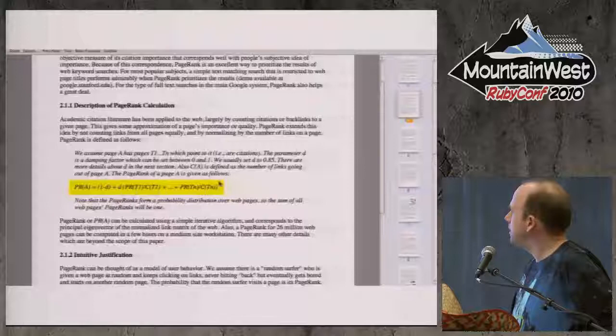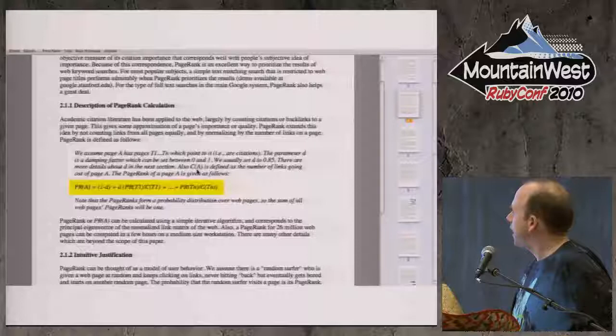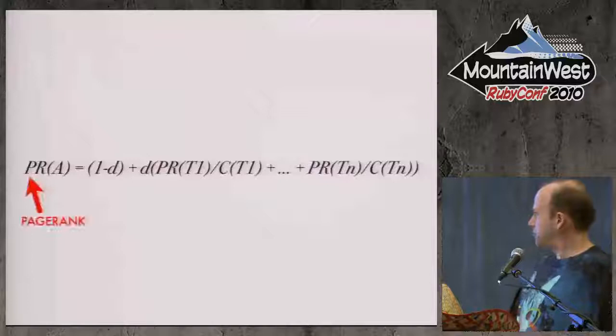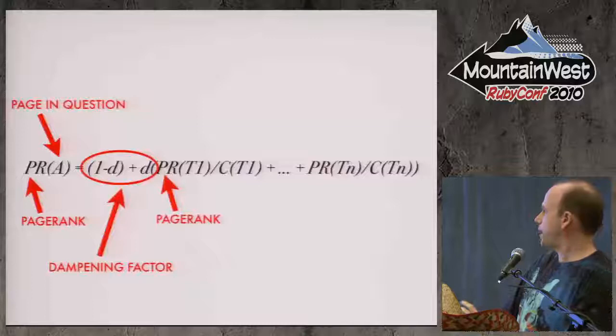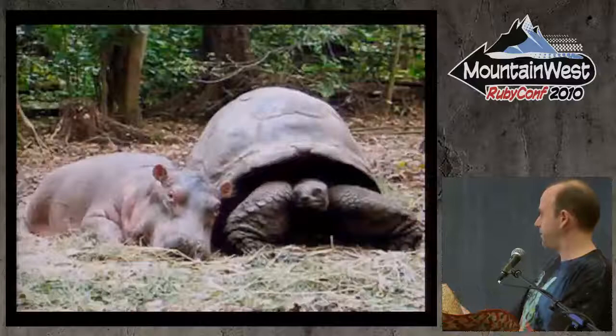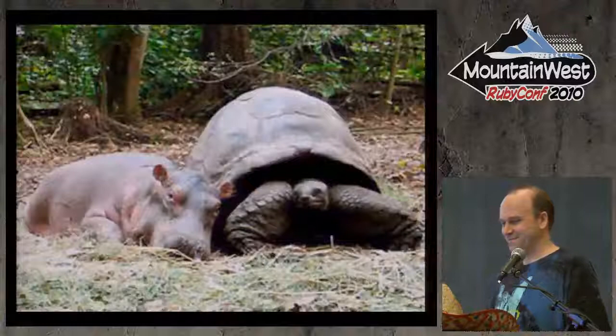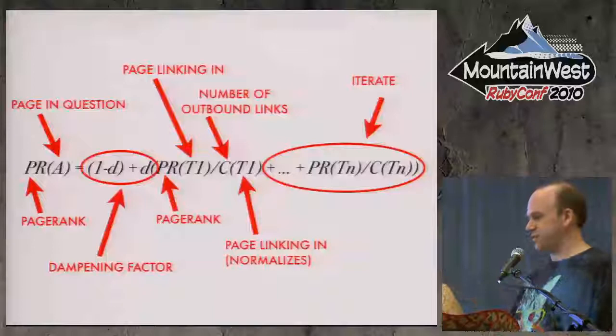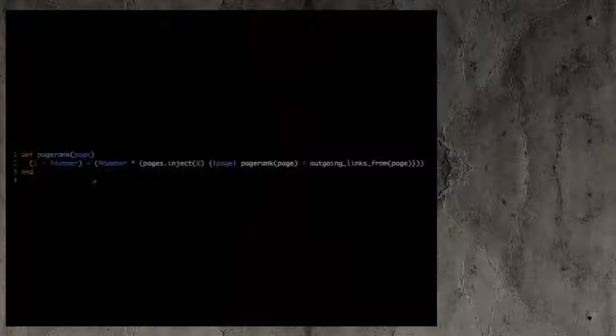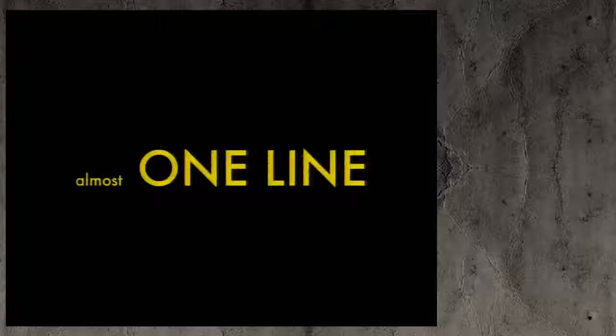When you have PR T1 through PR TN, what you're saying basically is for T1 through TN do this equation. So you're iterating over a collection and doing the same equation on it. And it sounds complicated, but here it is in 126 lines of Python. We can do it a little bit better than that. We assume page A has pages T1 through TN which point to it. The parameter D is a damping factor. And C is defined as the number of links going out of page A. So you got the page rank of a given page is equal to a damping factor applied to the page rank of a page linking in divided by the number of outbound links on the page linking in, and then you iterate over all those pages. And if the math is too much, here is a hippo with a turtle. You can see they're friends. This is a cozy picture.